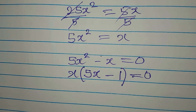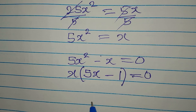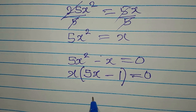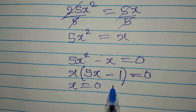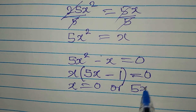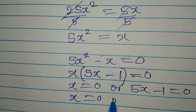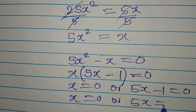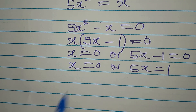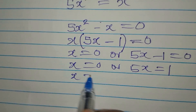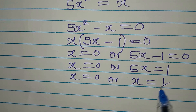Even if there are more than two terms, as long as their product is zero, at least one of them must equal zero. So we say x equals zero, or 5x minus 1 equals zero. From 5x minus 1 equals zero, we get 5x equals 1, so x equals 1 over 5.